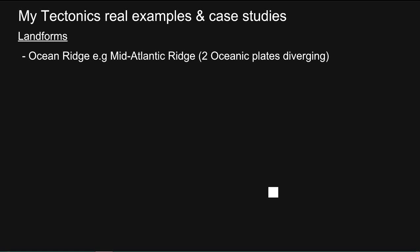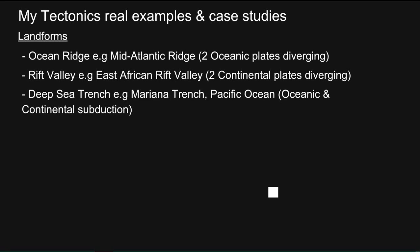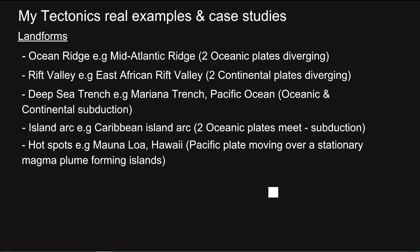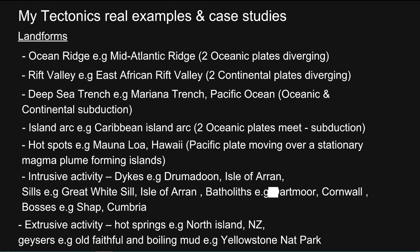The landforms: for an Ocean Ridge, we have the Mid-Atlantic Ridge. For a Rift Valley, we have the East African Rift Valley. For a Deep Sea Trench, the Mariana Trench in the Pacific Ocean. For an Island Arc, the Caribbean Island Arc is a good example. For Hotspots, Mauna Loa, Hawaii. For intrusive activity: Dykes — an example is Drumadoon, Isle of Arran; Sills — the Great Whin Sill, Isle of Arran; Batholiths — Dartmoor in Cornwall; Bosses — Shap in Cumbria. For extrusive activity: hot springs in North Island, New Zealand; and geysers and boiling mud, both found at Yellowstone National Park in North America.